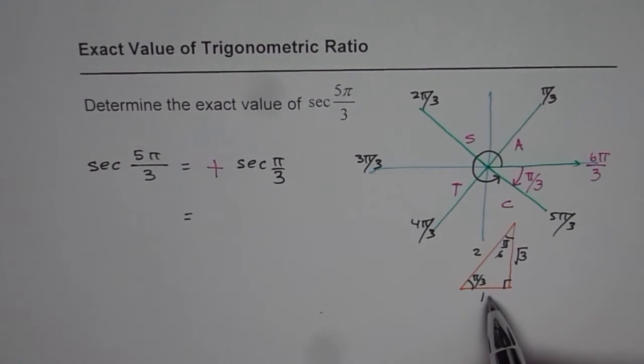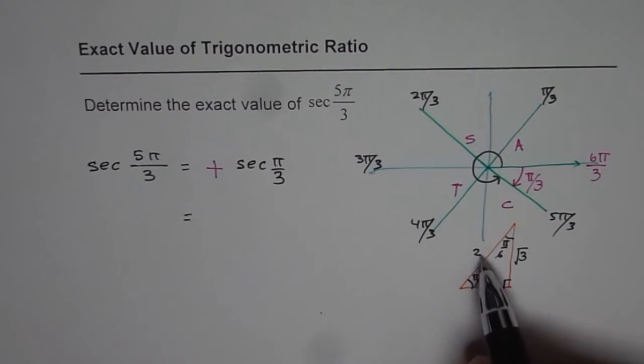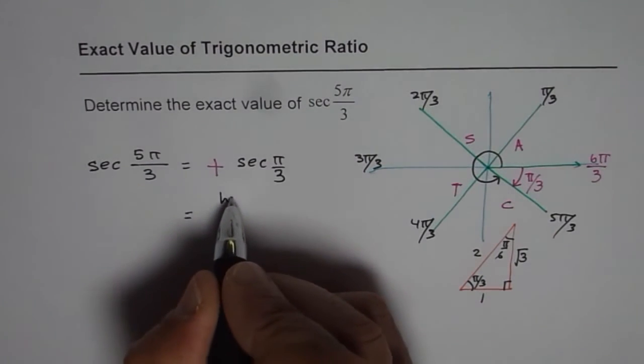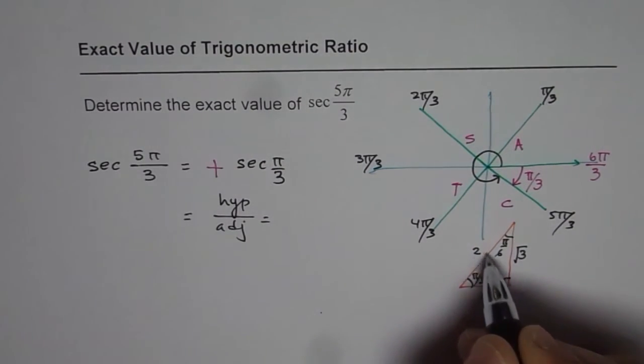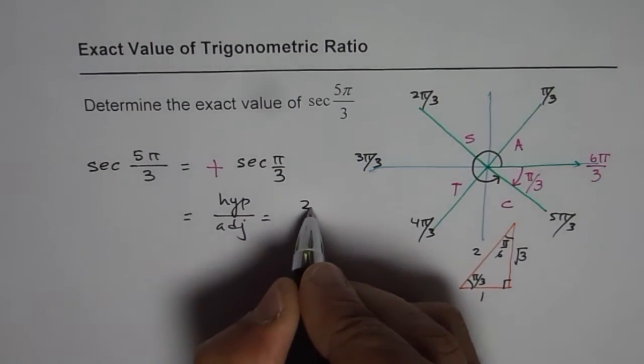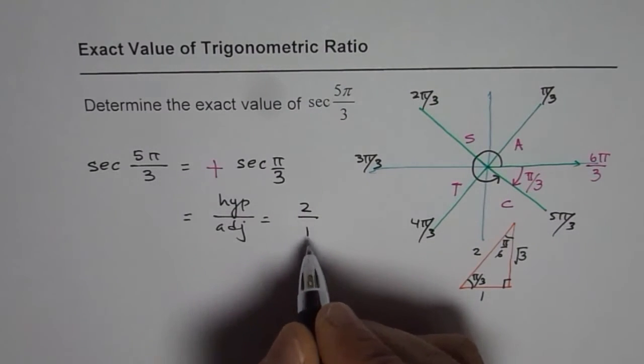Now cos is adjacent over hypotenuse. So secant will be hypotenuse over adjacent. So it is hypotenuse over adjacent side, which is 2 over 1. So our answer is 2.